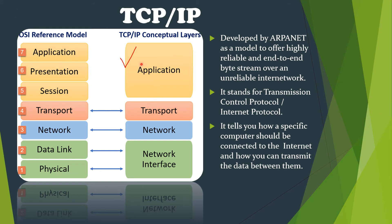When the Application Layer forwards the message to the Transport Layer, the Transport Layer checks information about source and destination ports at both ends. TCP and UDP are the two end-to-end protocols that work at the Transport Layer. UDP stands for User Datagram Protocol.